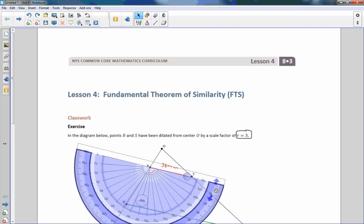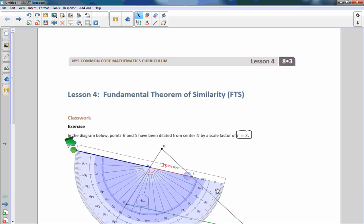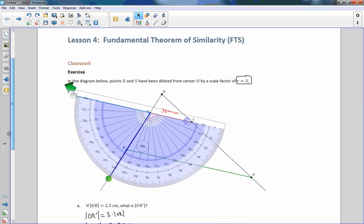And then I move this over to R prime, and it looks like it is, now look, it's obtuse, so it can't be 70 degrees. I have to look outside, and that is 110 degrees.